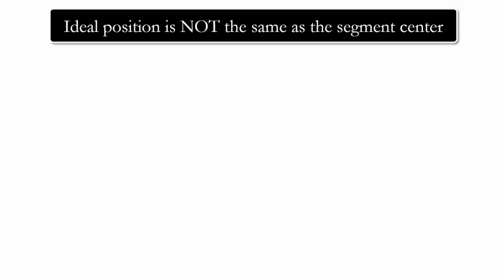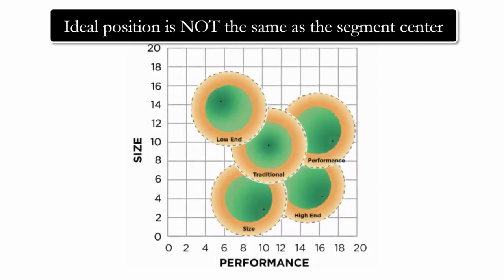Another important point is that the ideal position for products is usually not the same as the segment center. Within each segment circle, there is an ideal spot where demand is the highest — for the low-end, traditional, high-end, performance, and size segments. For the traditional segment, the segment center and the ideal spot are the same, but for all other segments, the segment center and the ideal spot are not the same.